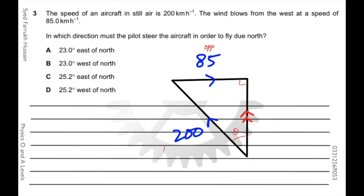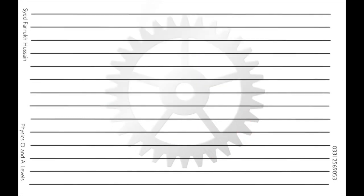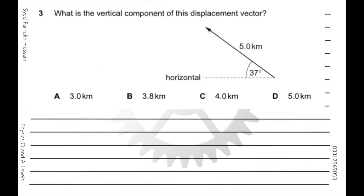Since 85 is the opposite side and 200 is the hypotenuse, opposite over hypotenuse gives sine. Solving gives 25.2 degrees. From the triangle, the 200 km/h vector lies between north and west, so the pilot must steer west of north — specifically northwest of north. That is the answer.